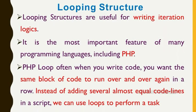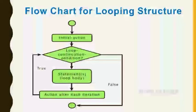Looping structures are useful for writing iteration logics. Iteration means if you want to perform a particular task repeatedly for a certain number of times — iteration 1, iteration 2, iteration 3, etc. It is the most important feature of many programming languages including PHP. PHP loops are used to execute the same block of code again and again, instead of adding several equal code lines in a script.